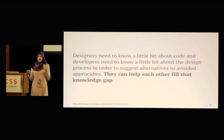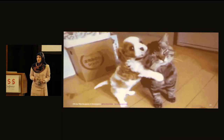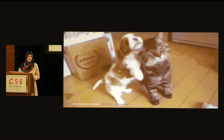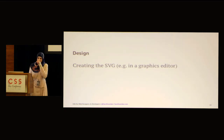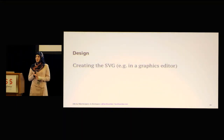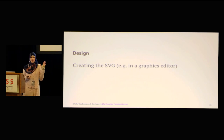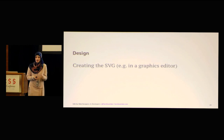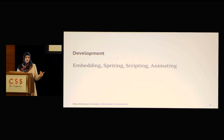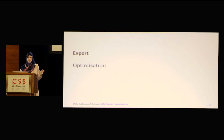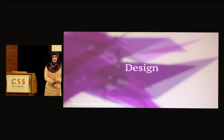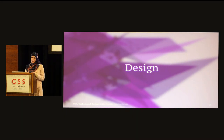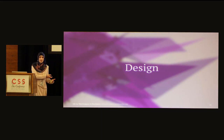In the long run, when designers and developers communicate and learn from each other, a designer is going to learn that a developer can really be their best friend. So I'm going to talk about a process that includes creating the SVGs in graphics editors — I'll be focusing on Illustrator because most design teams use it, but the principles apply to any other graphics editor. There's also the development phase: embedding, scripting, spriting, and animating. In between, there is exporting, which includes optimizing the SVG and the tools you can use to do that.